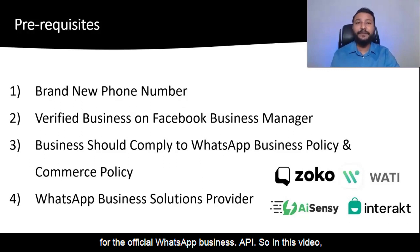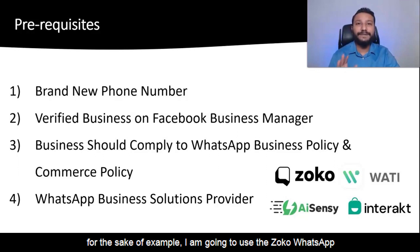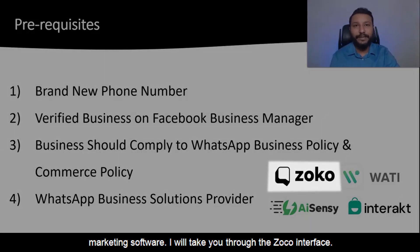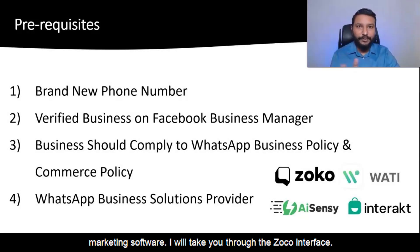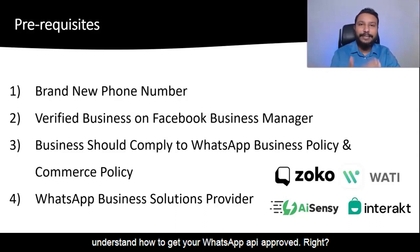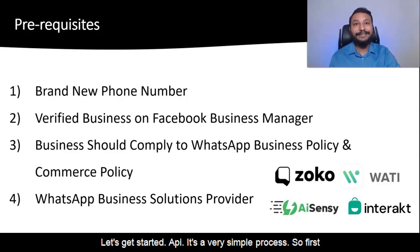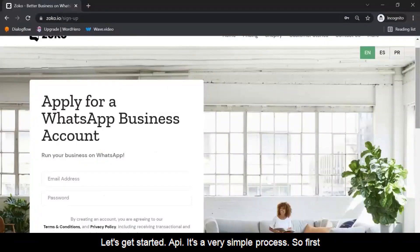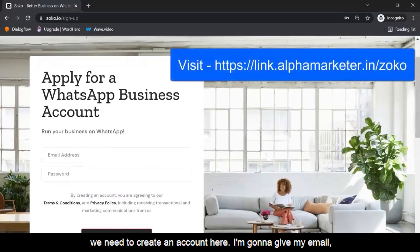In this video, for the sake of example, I am going to use the Zoco WhatsApp marketing software. I'll take you through the Zoco interface and let's go step by step and fill in the form and understand how to get your WhatsApp API approved. It's a very simple process, so first we need to create an account here.